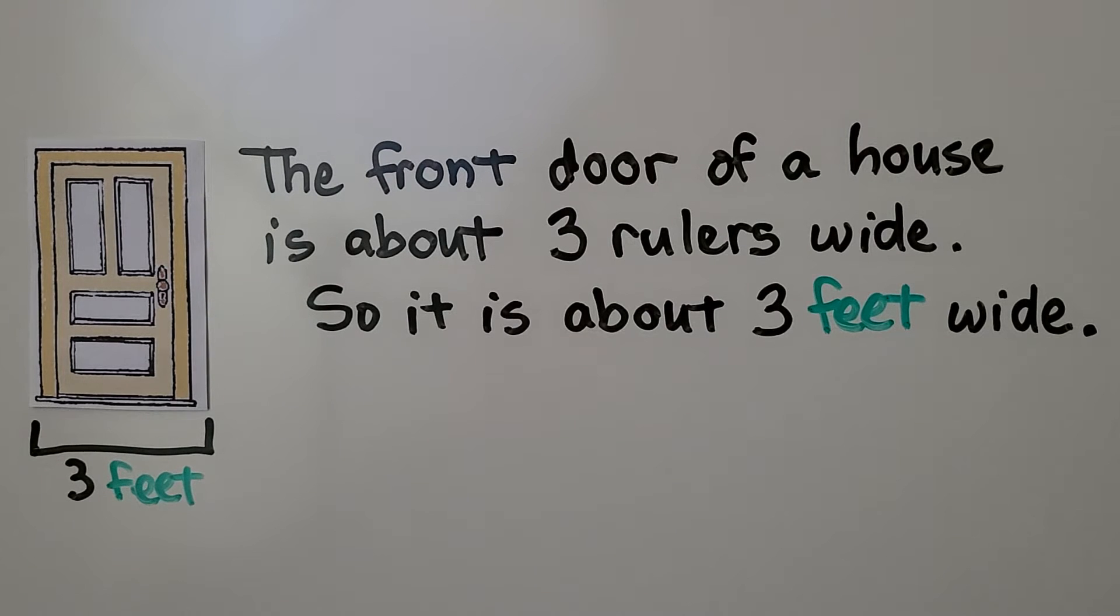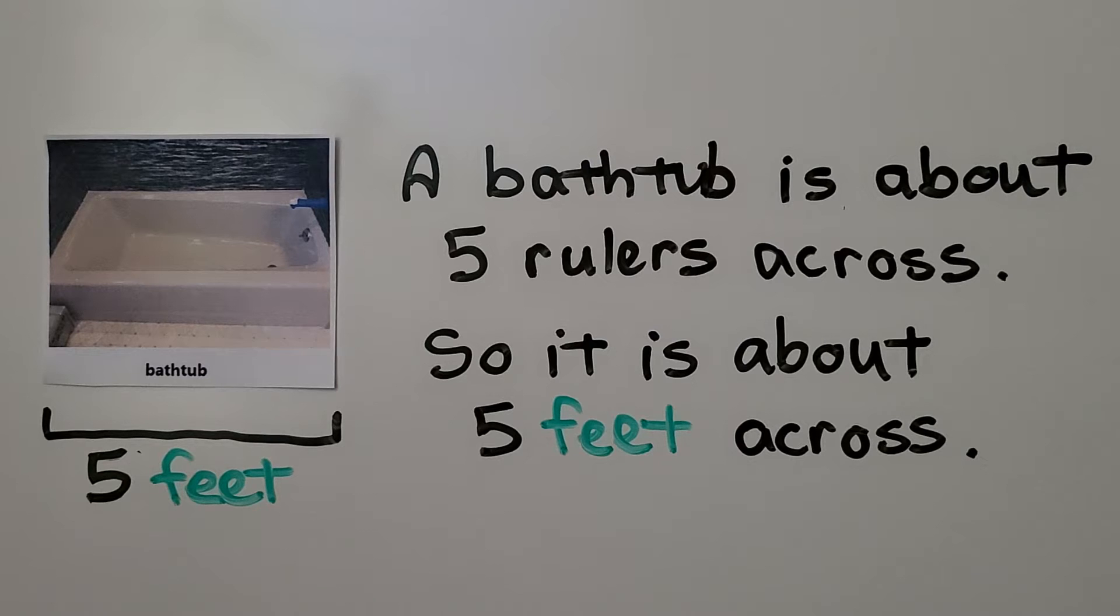The front door of a house is about 3 rulers wide, so it's about 3 feet wide. A bathtub is about 5 rulers across, so it's about 5 feet across.